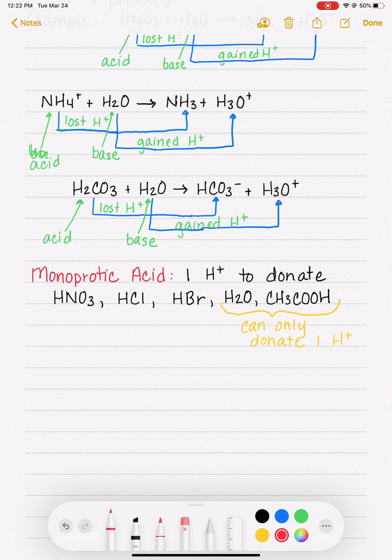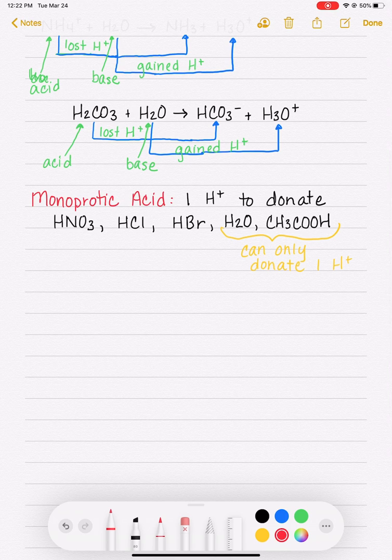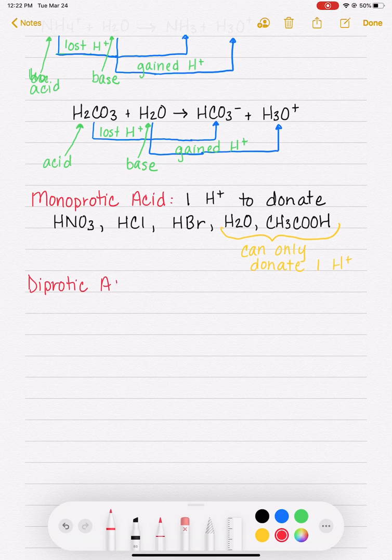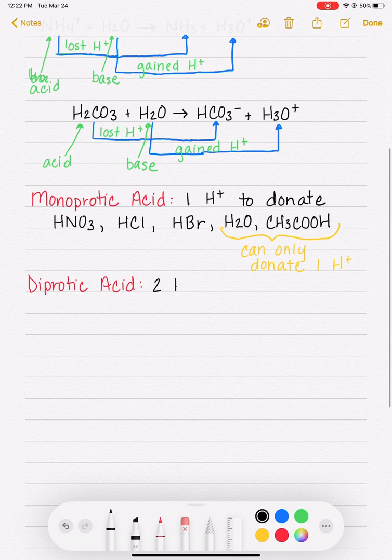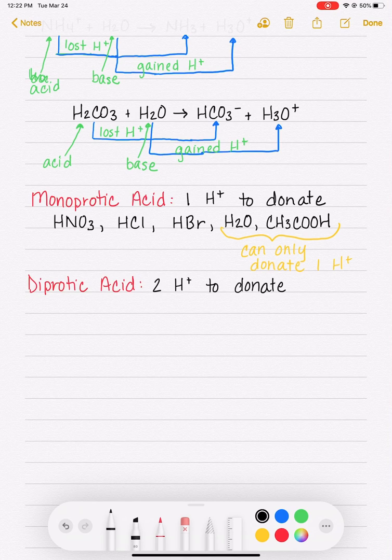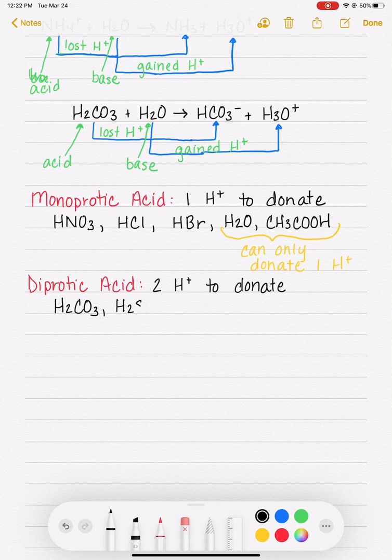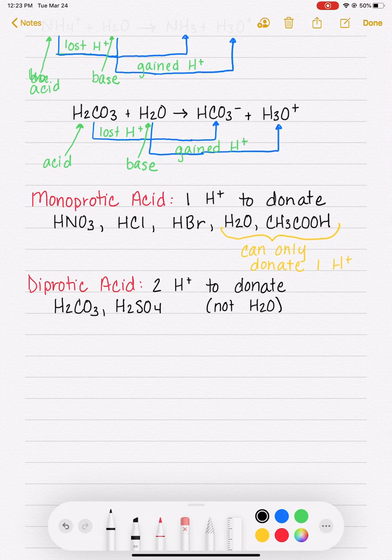Some acids have more than one hydrogen that they can donate—they have two, we call it a diprotic acid. So diprotic acid has two hydrogens that it can donate, and these molecules have a formula that typically starts with an H2, like H2CO3 or H2SO4. The only exception to that is going to be water, not H2O, because again water is monoprotic—it can only get rid of one of its hydrogens.